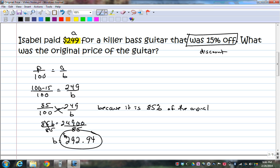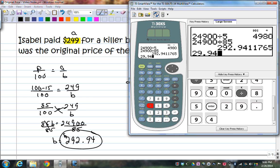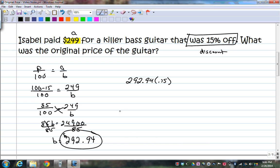Now, if I took, just to prove to you that this is going to work, if I took 292.94, and we're told she got 15% off of it, right? And I did times 15%. So 292.94 times 0.15, her sale, her discount, she got $43.94 off.